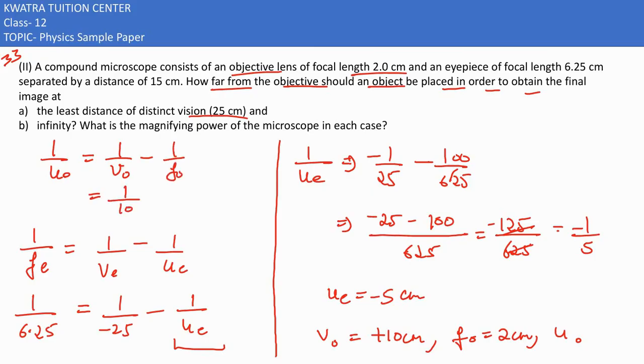Using the lens formula: 1/u₀ = 1/v₀ - 1/f₀. v₀ is 10 and f₀ is 2. This gives 1 minus 5 divided by 10, which equals minus 4 over 10 or minus 2 by 5. So u₀ = minus 5 by 2 = -2.5 cm. We also need to find the magnifying power.